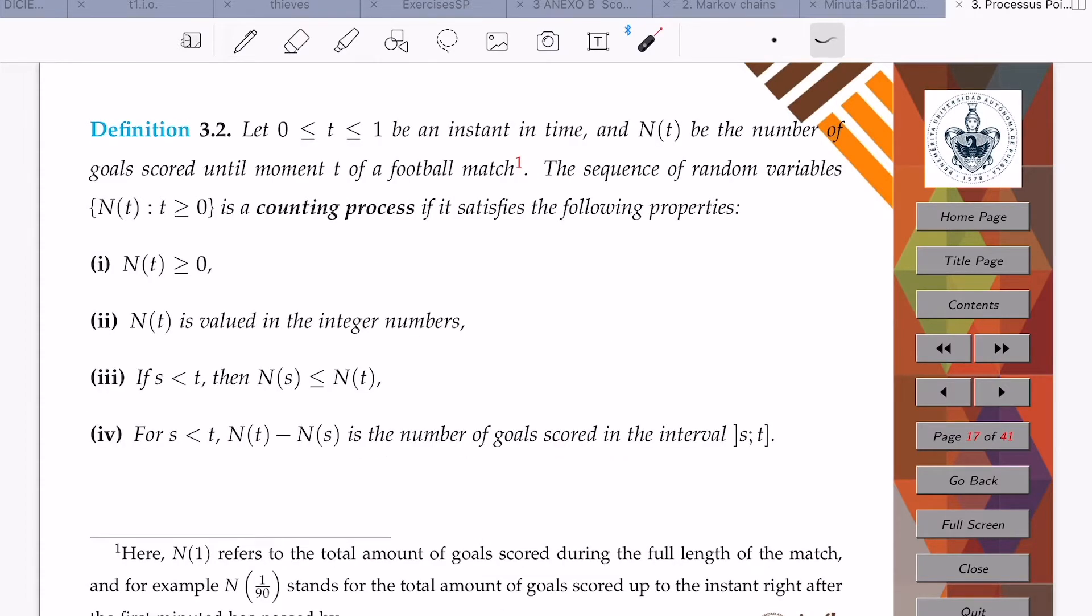When it comes to counting things, for instance goals during a match, we can always talk about a counting process. A counting process is a stochastic process which at least has the value of zero, is always valued in the integer numbers, is a non-decreasing stochastic process. This is the number of goals scored in a given interval.